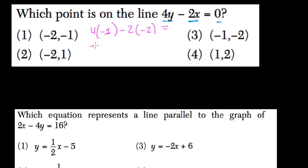Well, 4 times negative 1 is negative 4, minus 2 times negative 2 is minus negative 4, which equals 0. Since that works, point 1 is on the line.